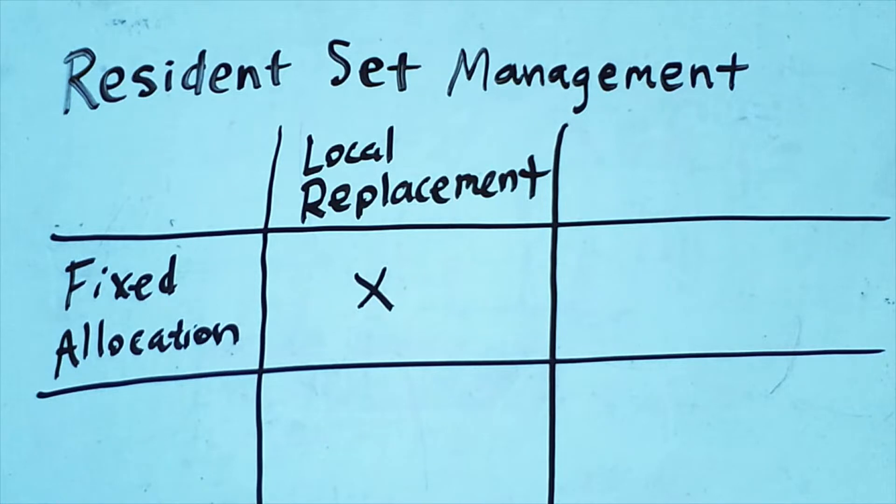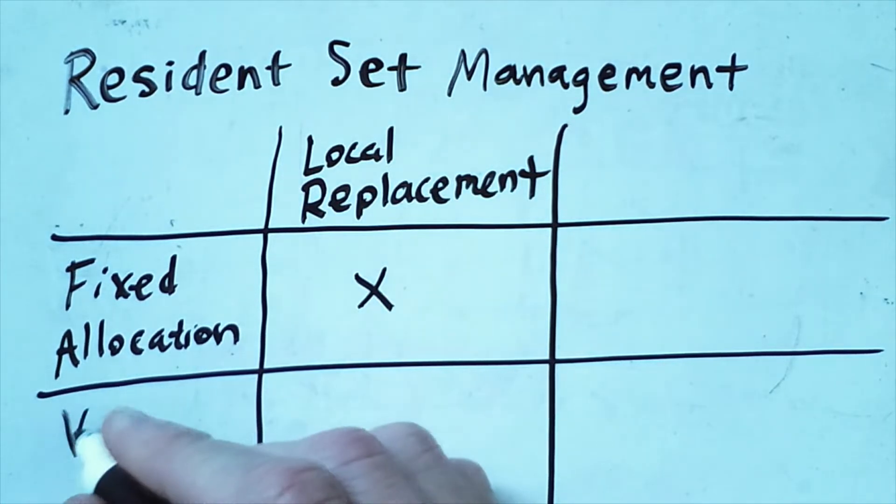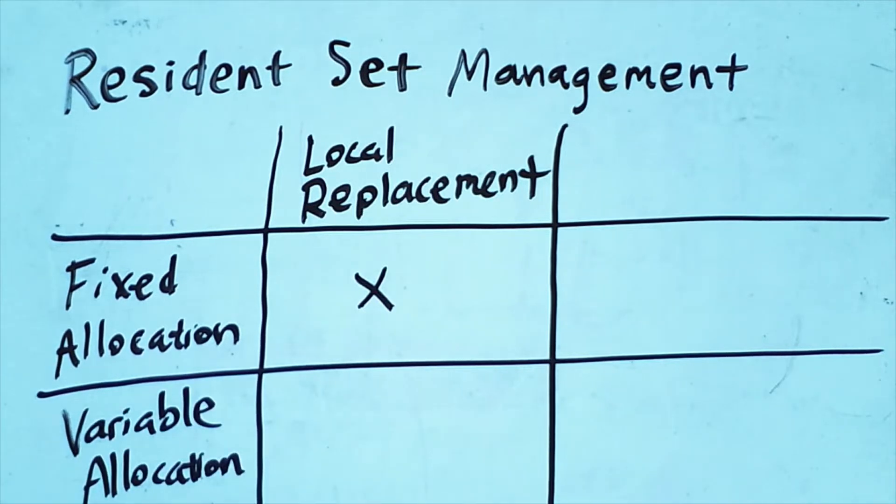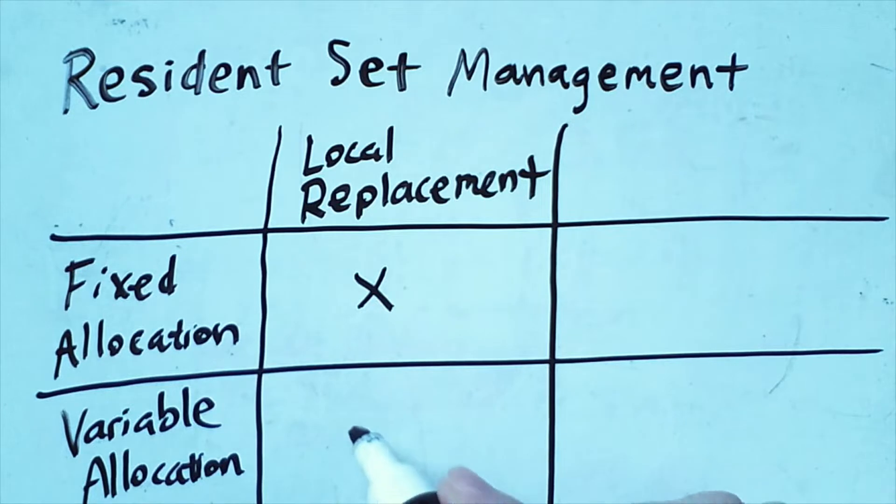Over the course of its execution, this would be an example of variable allocation. Now within this scheme we can have the possibility of local replacement, meaning that although the number of frames allocated to a process changes over its lifetime.